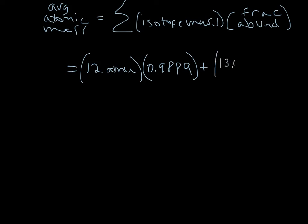And then we're going to add to that our second term for the second isotope, and that's 13.00335 AMU.